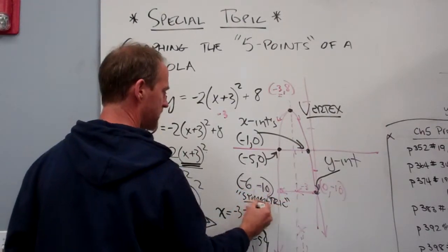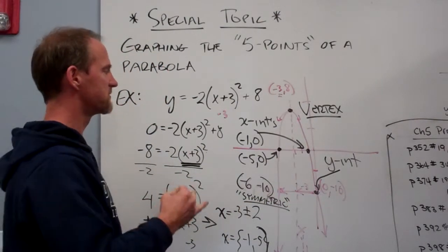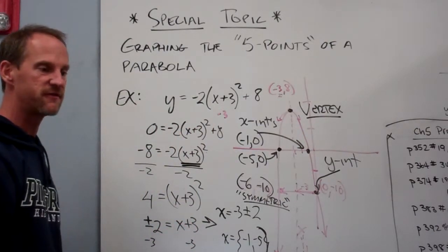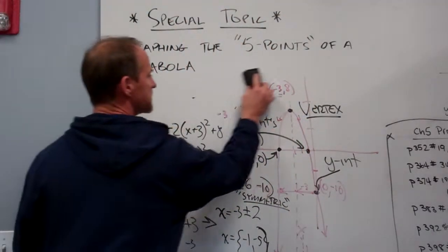And this is the one that's least important to remember the name. The intercepts are key and the vertex is key. So there are the five points of a parabola. When it's a fairly straightforward example, here is going to be a slightly more difficult example.